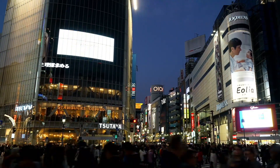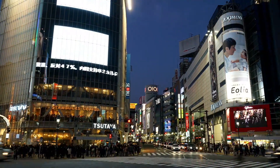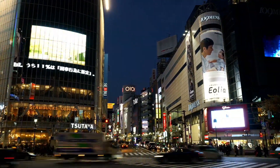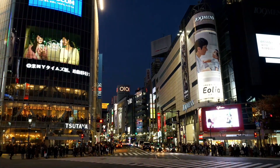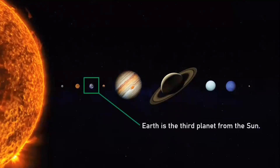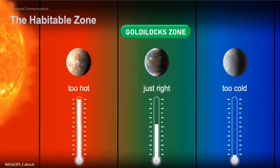For today's lesson, we are going to get to know more about the only planet we know of so far that's inhabited by living organisms — our very own Earth. Earth is the third planet from the Sun. It is situated in what we call the Goldilocks Zone or the Habitable Zone. A planet in this zone has the right temperature, not too hot or not too cold, suitable for holding liquid water, an essential ingredient to support life.